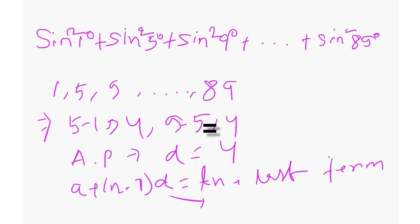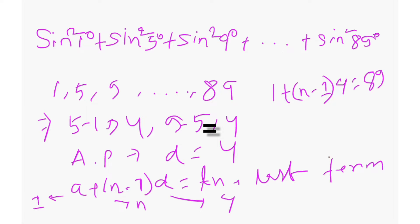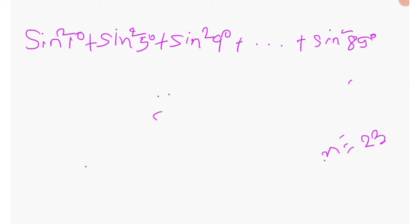Let's put in the values to find how many terms there are: 1 plus (n minus 1) into 4 equals 89, where a equals 1, d equals 4, and t_n equals 89. So (n minus 1) into 4 equals 88, giving n minus 1 equals 22, therefore n equals 23. There are a total of 23 terms in this series.